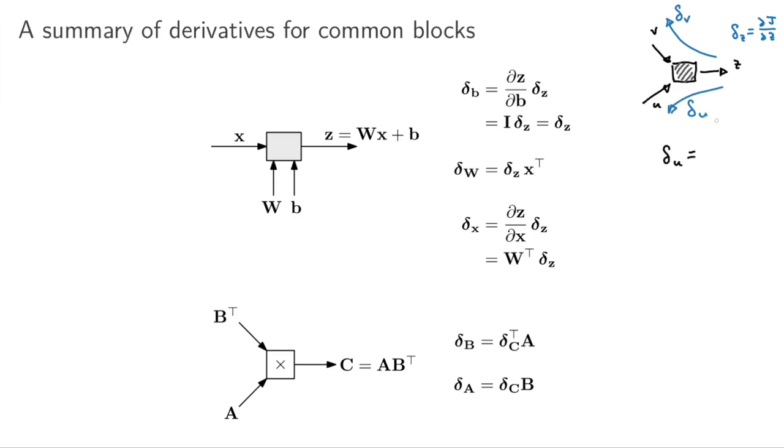—remember this is really if I wiggle U, what's the effect on the loss at the output? So this is just the definition of the error signal. In this case, we can just apply the chain rule.